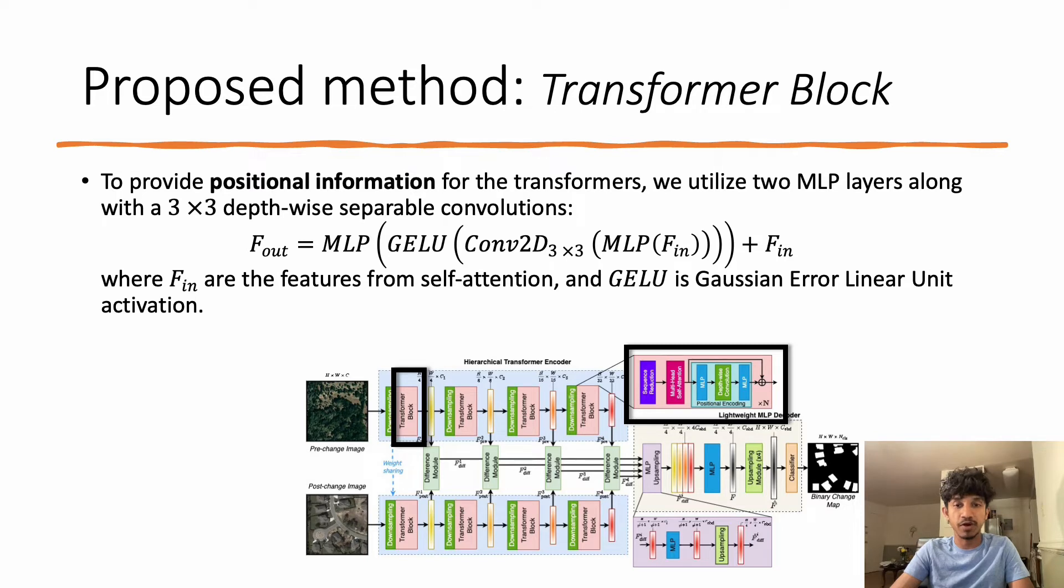To provide the positional information for transformers, we utilize two MLP layers along with 3×3 depth-wise separable convolutions as given in this equation. Our positional encoding scheme differs from the fixed positional encoding utilized in previous transformer networks like ViT, which allows our transformer to take test images that are different in resolution from the ones used during training.